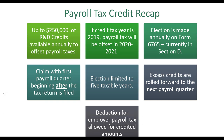You claim the credit against payroll starting with the first payroll quarter beginning after the tax return is filed. The election is limited to five taxable years — though not necessarily consecutive. Excess credits roll forward to the next payroll quarter automatically until you can fully monetize them. The deduction for the employer payroll tax is allowed for the credited amounts.